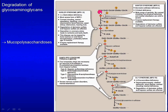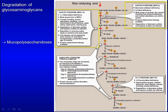Here is an example of heparan sulfate. This is the non-reducing end. The first step in degradation of heparan sulfate is removal of the sulfate group from iduronic acid, catalyzed by iduronate sulfatase. This is followed by removal of the iduronic acid residue by iduronidase. These two enzymes are clinically important. Deficiency in either enzyme leads to mucopolysaccharidosis. Specifically, a deficiency in iduronate sulfatase leads to Hunter syndrome, while a deficiency in iduronidase causes Hurler syndrome.